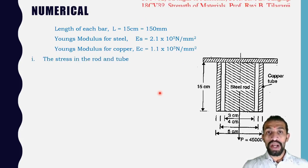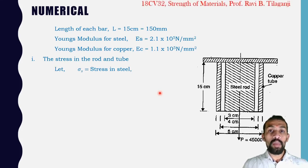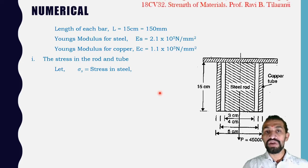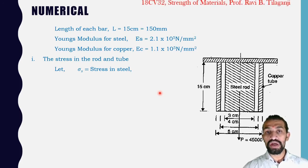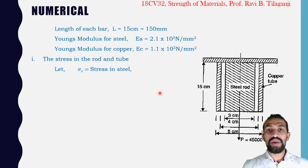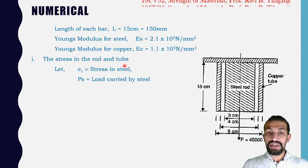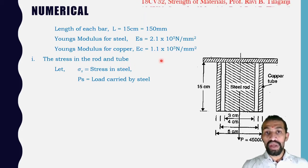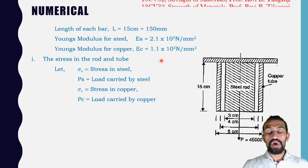To find stress in the rod and tube: let σS be stress in steel and σC be stress in copper. Whether using σS or pS notation, clearly state what symbol represents in the solution for the evaluator.